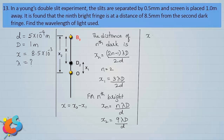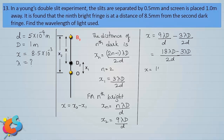Therefore, X equals X2 minus X1, which is 9 lambda D divided by d minus 3 lambda D divided by 2d. Taking 2d as the LCM, this gives 18 lambda D minus 3 lambda D, so X equals 15 lambda D by 2d.